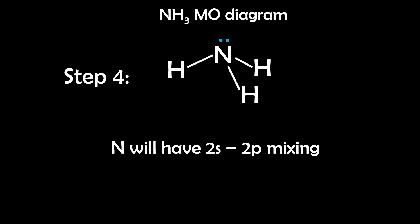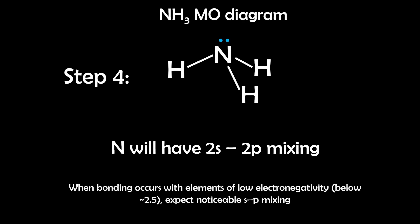Step 4: Does it have sp mixing? Yes, in NH₃ there is sp mixing on nitrogen. Because hydrogen has low electronegativity, it doesn't pull nitrogen's orbitals apart, so nitrogen's 2s and 2p orbitals stay close in energy, allowing them to mix. A general rule: when bonding with elements of low electronegativity — approximately below 2.5 — we expect noticeable sp mixing for lighter elements like nitrogen, carbon, and boron.